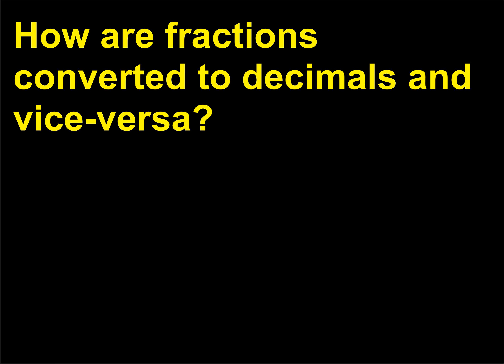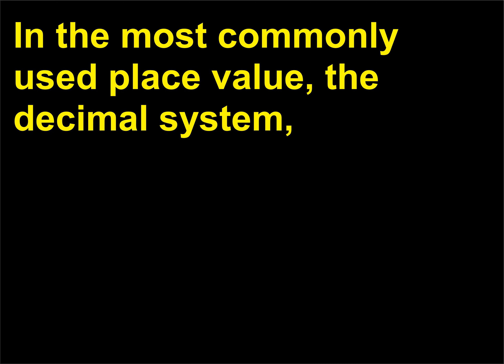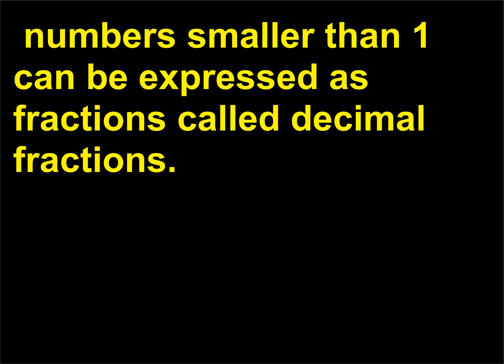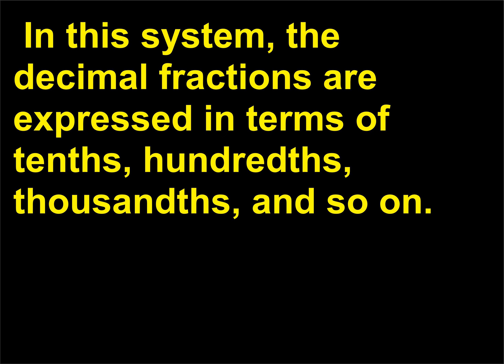How are fractions converted to decimals and vice versa? In the most commonly used place value, the decimal system, numbers smaller than one can be expressed as fractions called decimal fractions. In this system, the decimal fractions are expressed in terms of tenths, hundredths, thousandths, and so on.